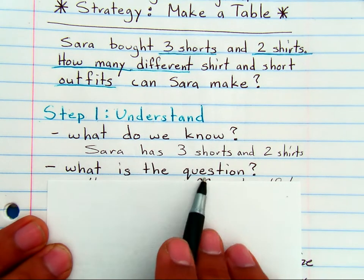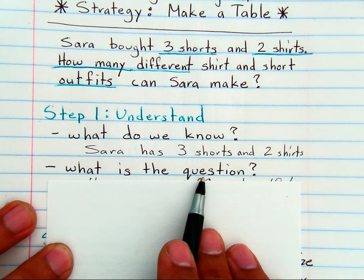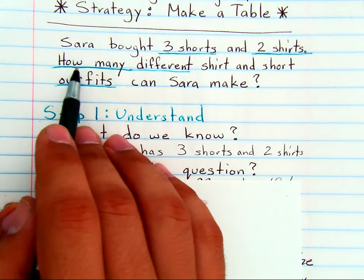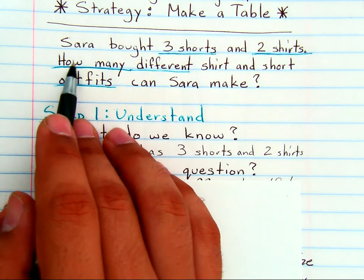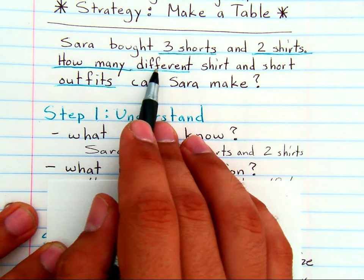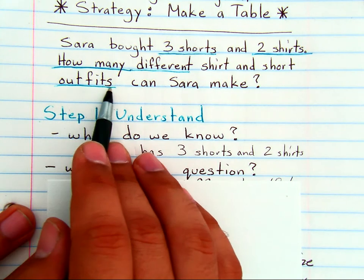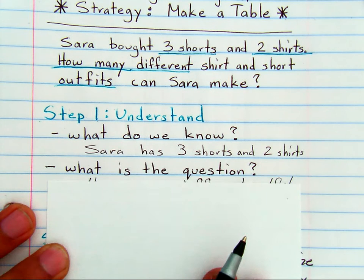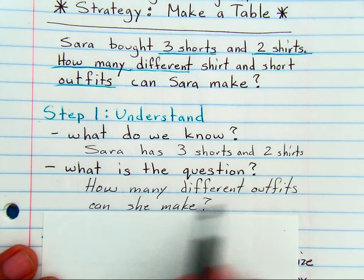Now what is the question? In order to understand what we're supposed to do, we have to know what we know and what the question is. In this case, the question is how many different shirt and short outfits can Sara make? So we want to know how many different outfits can she make?